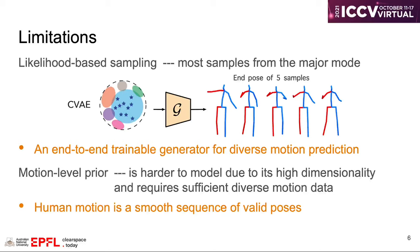Based on the fact that human motion is a smooth sequence of valid poses, we propose to use only pose level prior to regularize the outputs of our generator, and meanwhile enforce the trajectories of those poses to be smooth.